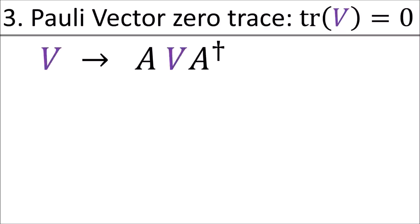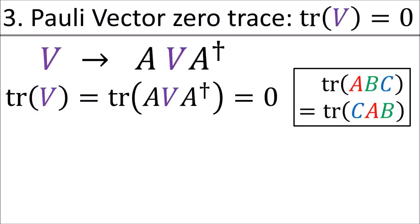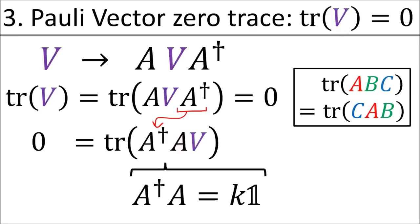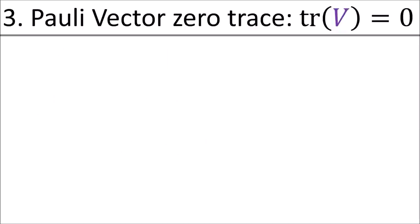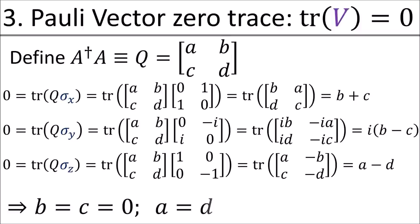Finally, since polyvectors have zero trace, the result of the transformation should also have zero trace. When we have the trace of a product of matrices, a theorem from linear algebra tells us that we can cycle the product order, bringing the last one and putting it in front. Since the trace of V is zero for any possible V, the only way for this trace to be zero is if A dagger A equals the identity matrix times a constant. This can be shown by checking the various cases of V and solving for the matrix entries of A dagger A.